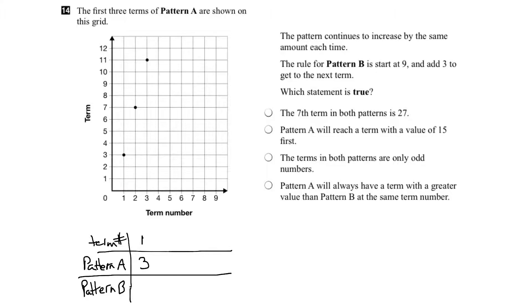Let's look at term 2. The value is 7 for Pattern A. So term 2, the value is 7. And then for term 3, the value is 11.